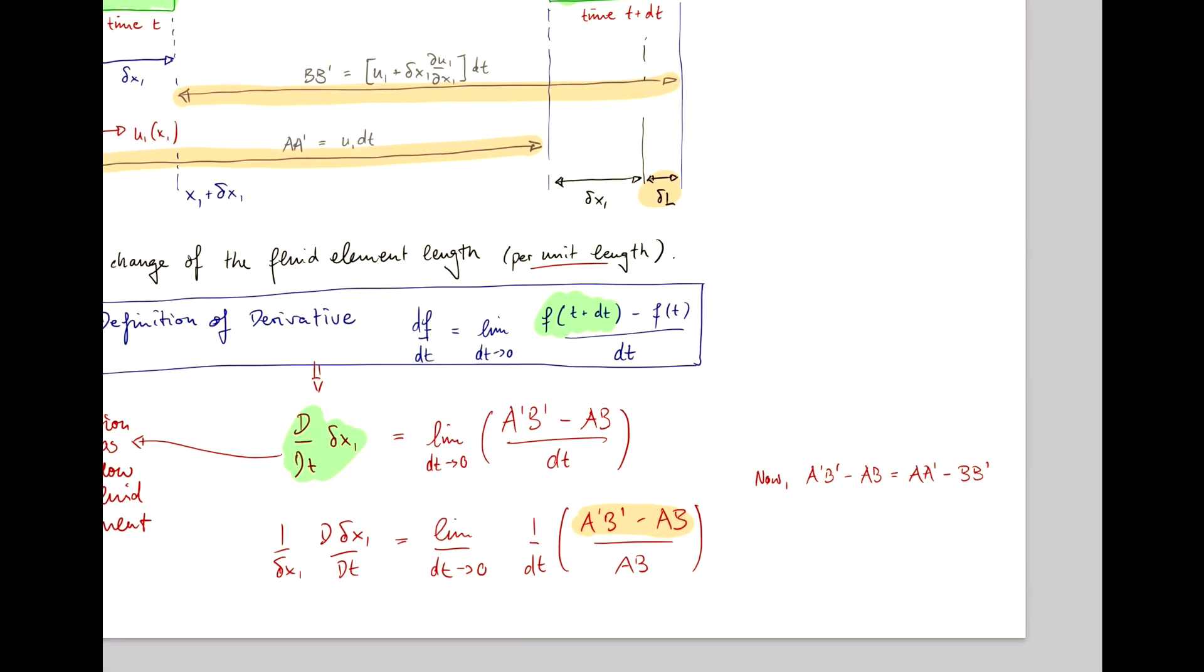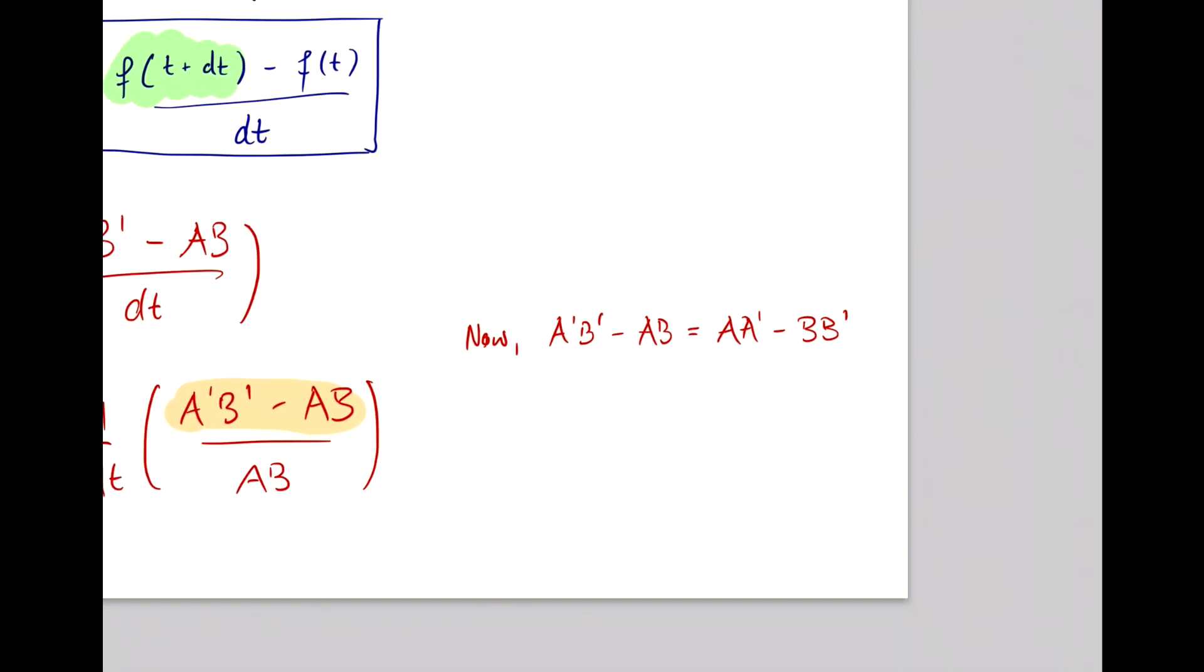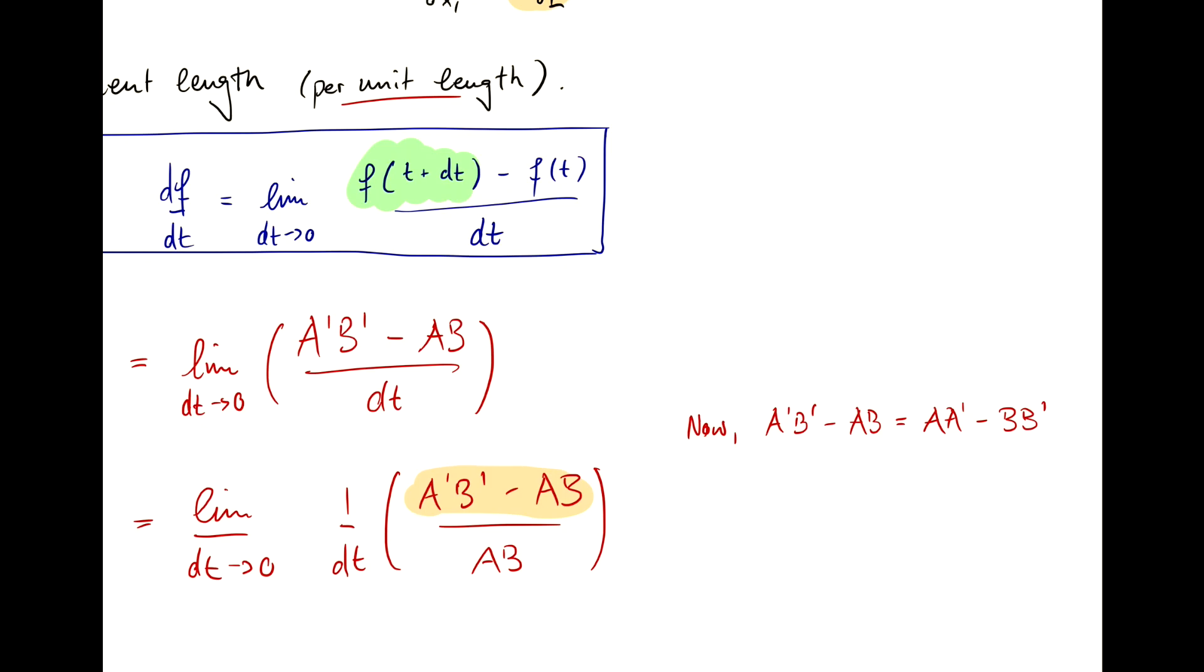But that's interesting because we can write a a dash as u1 dt and b b dash in terms of this Taylor expansion here.